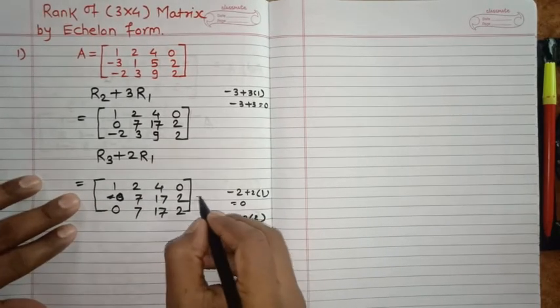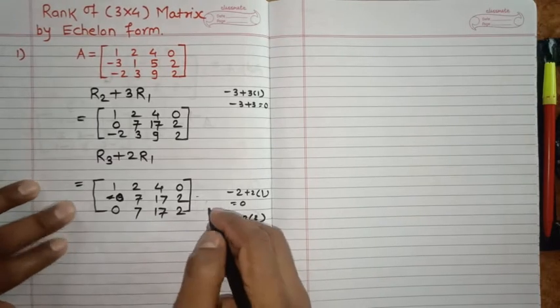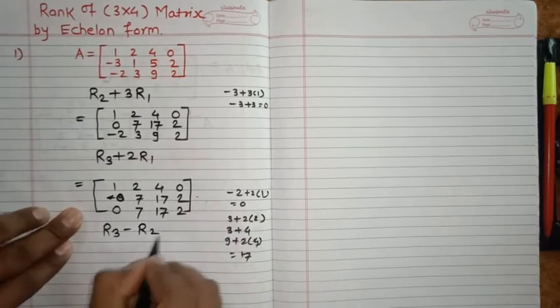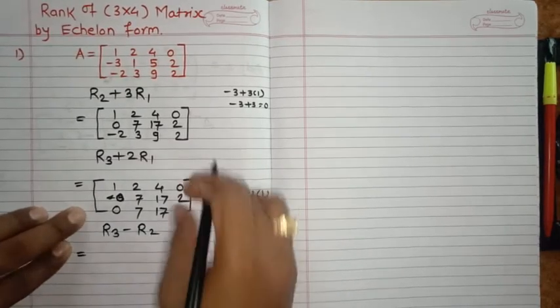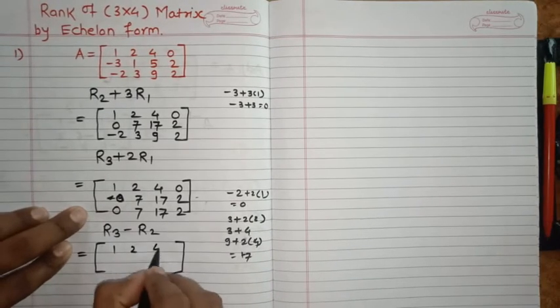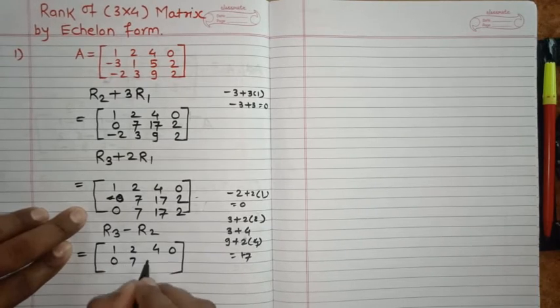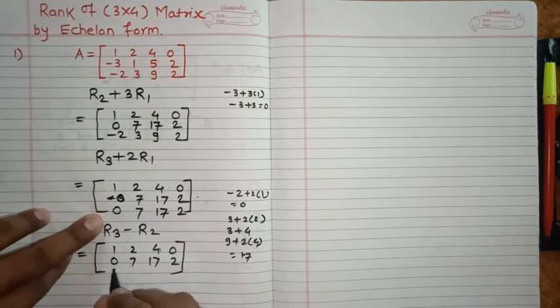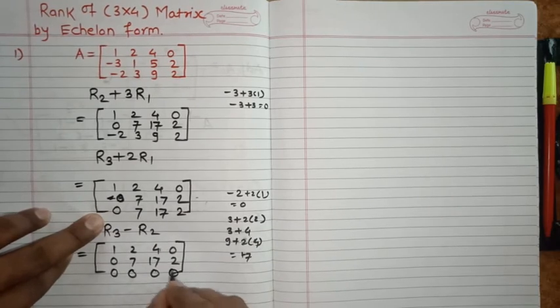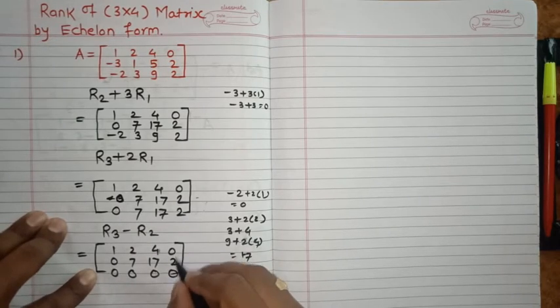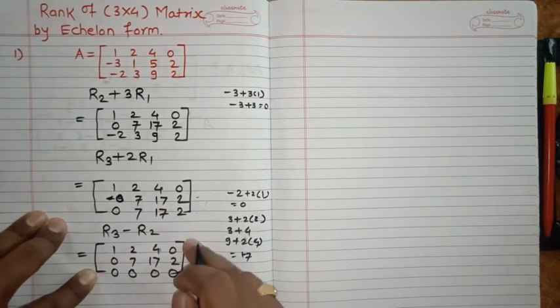Now see here, row 2 and row 3 are same. If you perform R3 minus R2, only R3 will change, remaining rows as it is. So write down 1, 2, 4, 0 as it is, and 0, 7, 17, 2. So R3 minus R2: 0, 7 minus 7 is 0, 17 minus 17 is 0, and 0. So R3 row completely becomes 0. Now, the number of non-zero rows is 2.